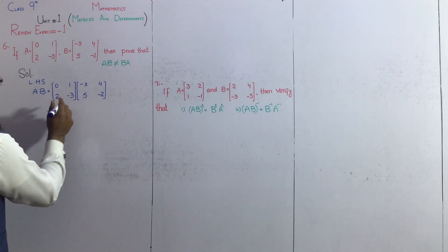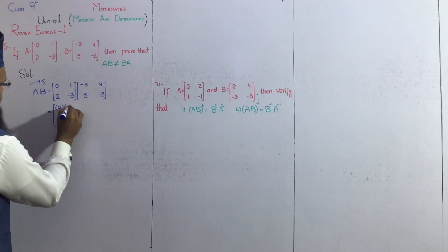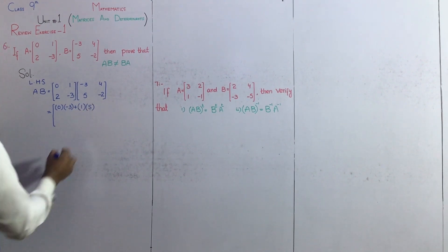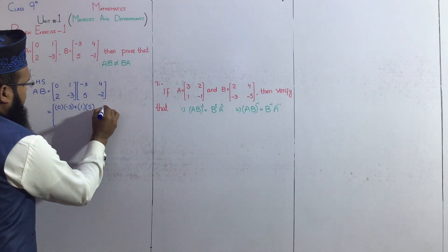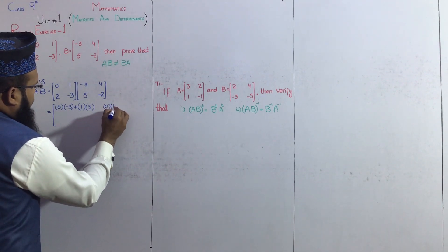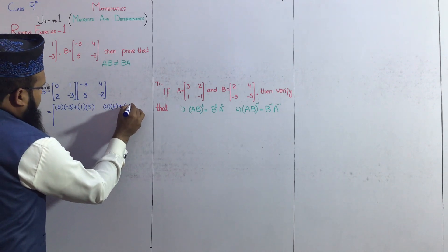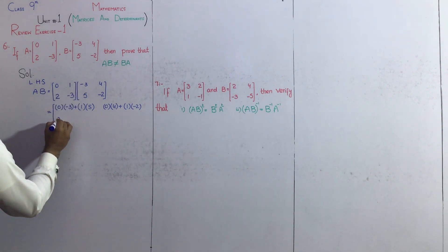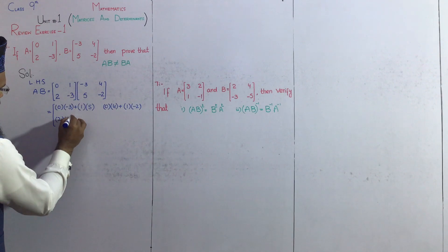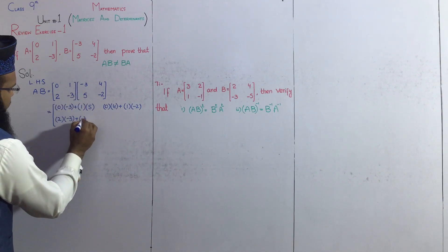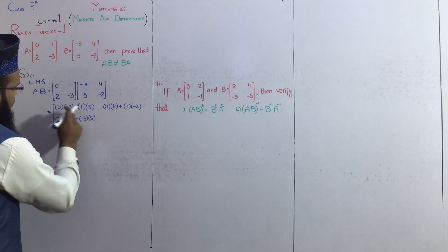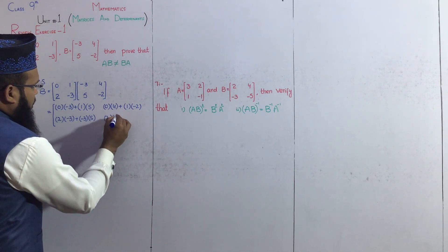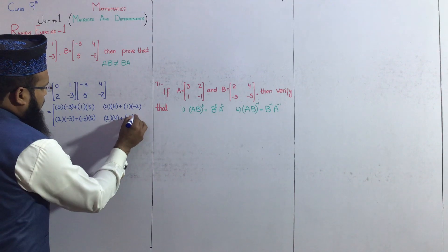Sabse pahle first row, first column: 0 multiply by minus 3, plus 1 multiply by 5. Next, first row second column: 0 multiply by 4, plus 1 multiply by minus 2. Next, second row first column: 2 multiply by minus 3, plus minus 3 multiply by 5. Next, second row second column: 2 multiply by 4, plus minus 3 multiply by minus 2.